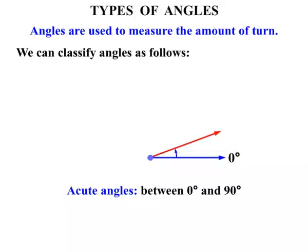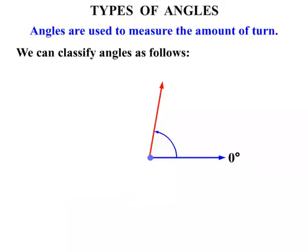So if we keep turning the red arm, all of those angles shown are still acute angles. Now we get to a point where it's straight up. We've created a right angle, and that equals 90 degrees.